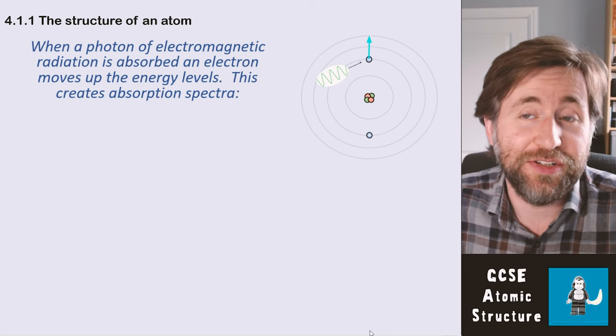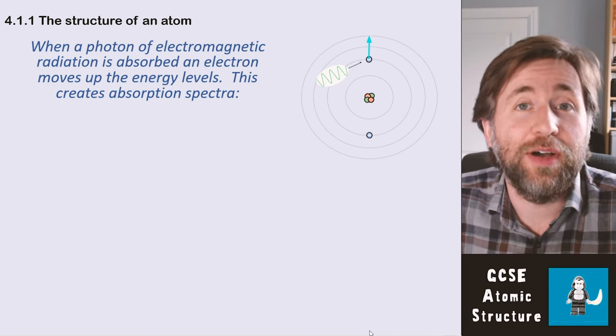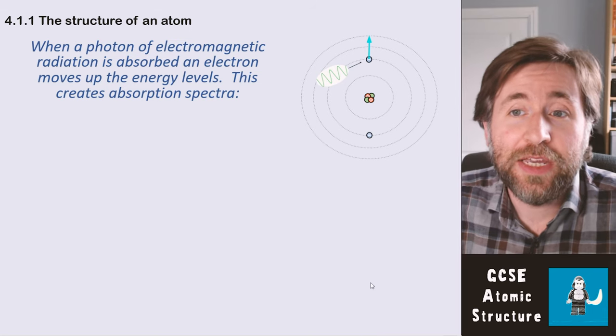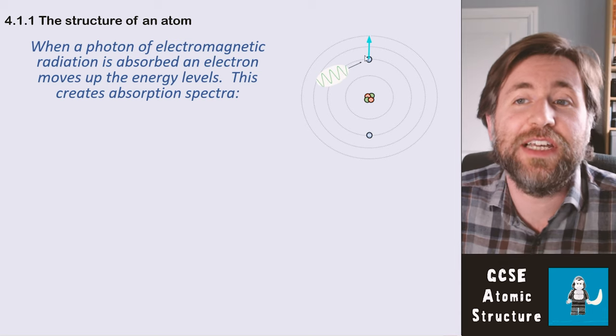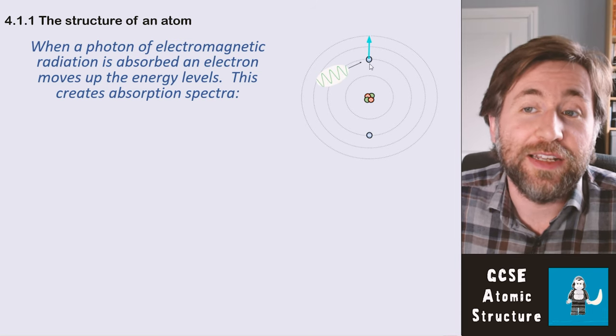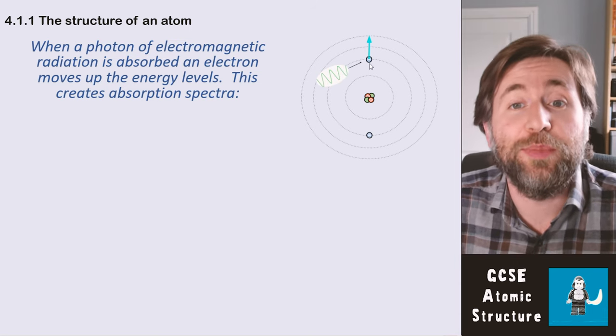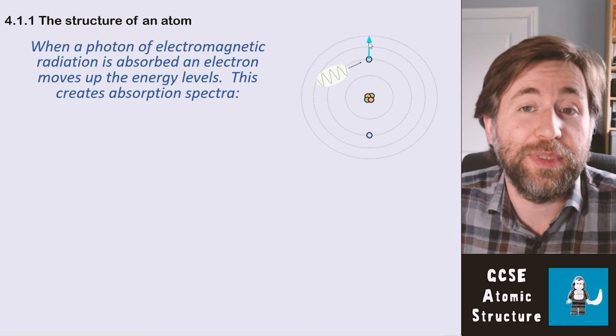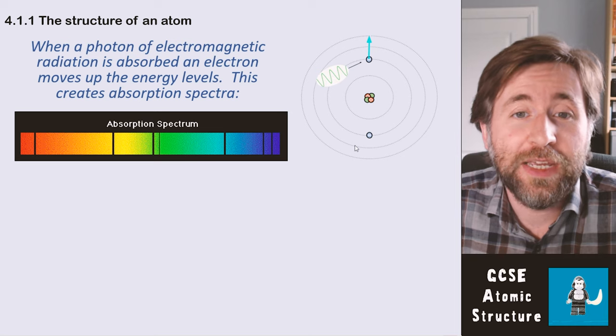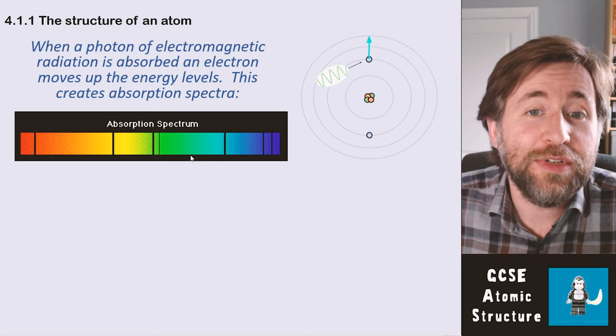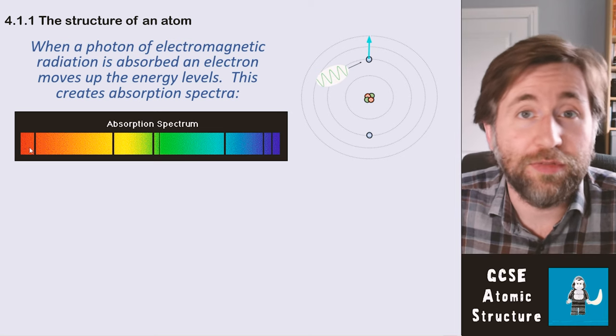It's these ideas of energy levels. Energy levels are how atoms interact with light. When a photon comes along, a single piece of light, it can give its energy to an electron. If that electron absorbs that energy, it will be raised up the energy levels—it will be given energy. That creates these things called absorption spectra.